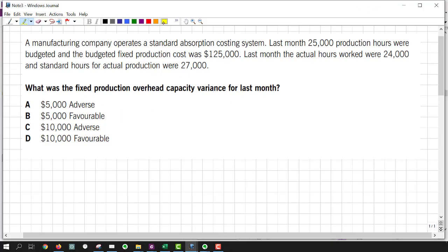First thing I do, I read this requirement. And I see a keyword jump out at me, variance, fixed production overhead capacity variance. So I do not read anything in the little story. That's just going to confuse me at this point. What I'm going to do is make a template or recall a template and put it down on scratch paper or in the scratch pad.